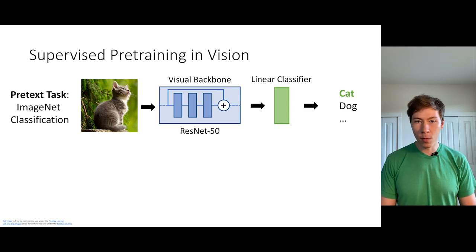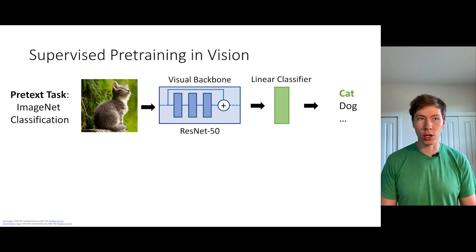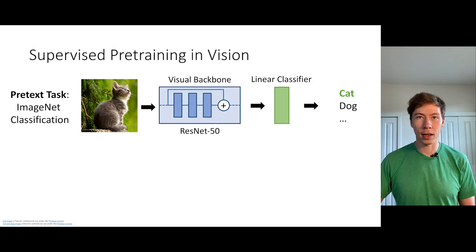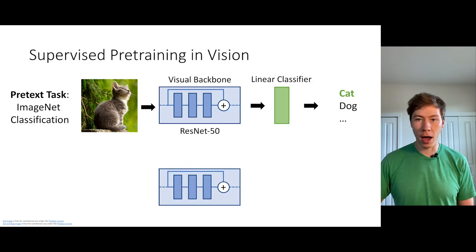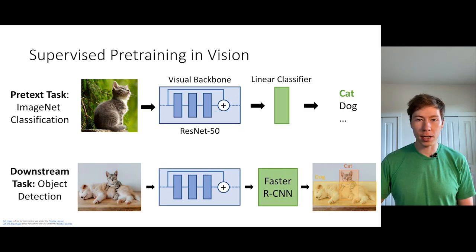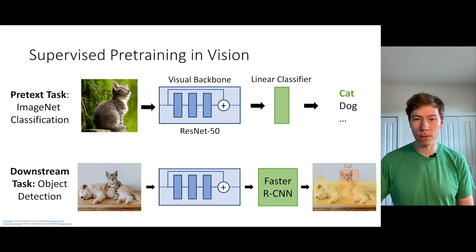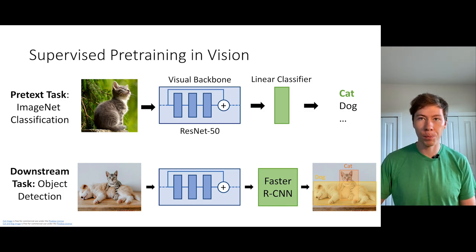The prevailing way that we do this is via supervised pre-training on ImageNet. We train on ImageNet, and then after it's converged, we transfer that visual backbone to various downstream tasks, like object detection. This has been a really successful paradigm for learning high-quality visual features in computer vision over the past five years or so.